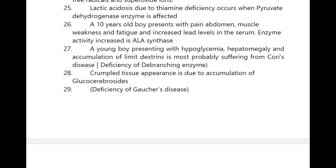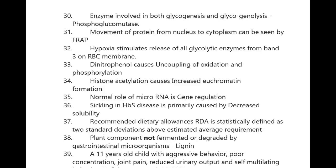Cori's disease is due to deficiency of debranching enzyme. Crumpled tissue appearance is due to accumulation of glucocerebrosides. Enzyme involved in both glycogenesis and glycogenolysis is phosphoglucomutase. Movement of protein from nucleus to cytoplasm can be seen by FRAP — fluorescence recovery after photobleaching.